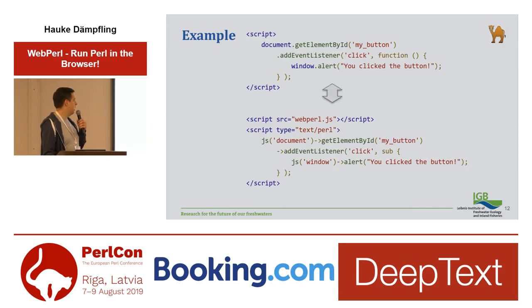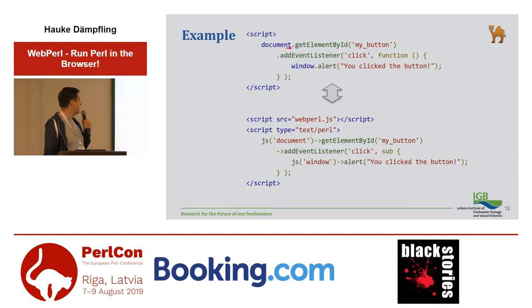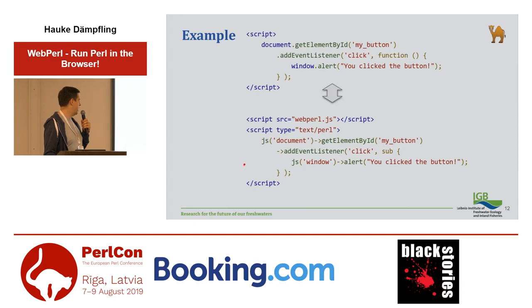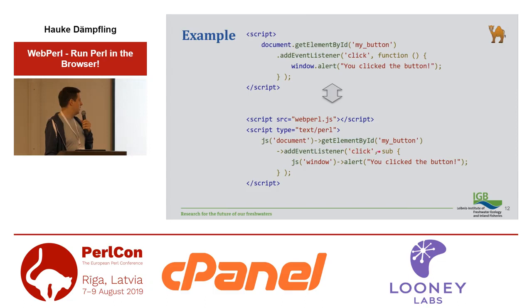Here's a slightly more practical example. At the top we have a normal piece of JavaScript code: it's finding a button in the page, adding an event listener for the click event, and registering a callback function for when the user clicks the button. At the bottom we see the equivalent WebPerl — it works exactly the same. We use the js function to get the document object from JavaScript, call a method on it which returns another object, call another method on that, and register a click handler — except it's a Perl subroutine. So when you click on the button on the web page, you're actually internally calling a Perl subroutine, which is how you can build GUIs using this.